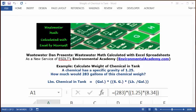Today's example: calculate weight in pounds of a chemical in a tank. Today's problem reads, a chemical has a specific gravity of 1.25. How much would 283 gallons of this chemical weigh?